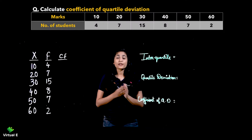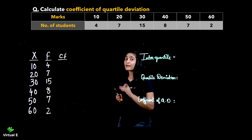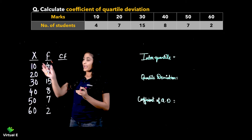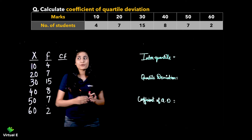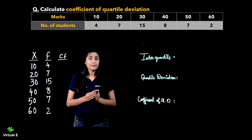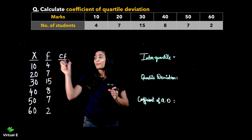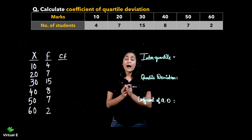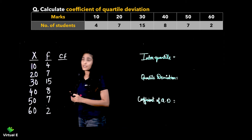Starting with the first numerical of discrete series. We have the question with us. The values of x and f are already noted down. Since it is a discrete series, we are dealing with frequency. The first thing we will find out is cumulative frequency.